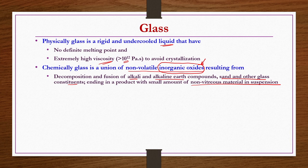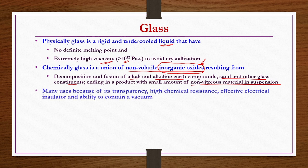A certain amount of non-vitreous material is also required in order to provide strength to the glass, but it is very negligible. Because of its transparency, high chemical resistance, effective electrical insulation ability, and ability to contain a vacuum, glass has several applications. Some important applications will be listed under different types of commercial glasses.